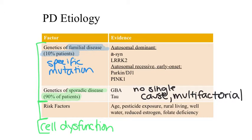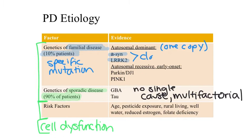First, I will describe a couple of autosomal dominant mutations that can lead to familial Parkinson's disease. Autosomal dominant mutations mean that you only need one copy of the mutated gene for these mutations to cause the disease. Mutations in a protein called alpha-synuclein or a protein called leucine-rich repeat kinase 2, or LRRK2, are two primary examples of autosomal dominant familial Parkinson's disease. In both cases, mutations in these genes lead to a very typical or classical presentation of Parkinson's disease. However, there are also cases of duplication or triplication of the alpha-synuclein gene, and these modifications lead to early-onset Parkinson's disease.